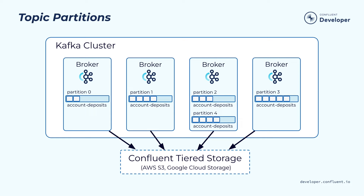Since Kafka is designed as a distributed system, we need a way to distribute data within a topic across different computing nodes in the Kafka cluster. This is achieved through the concept of partitions. When you create a topic, you can specify one or more partitions. A partition is the unit of data distribution, and for a given partition, data is typically stored within a single broker. With Confluent's tiered storage support, data for a partition can actually go beyond the capacity of a single broker. Partition is also the unit for parallelism — each partition can be accessed independently and in parallel by producers and consumers.